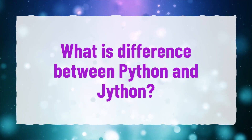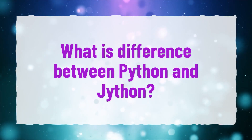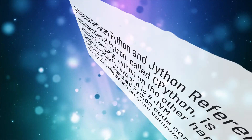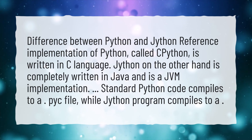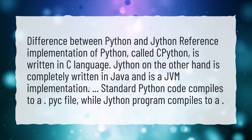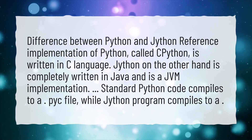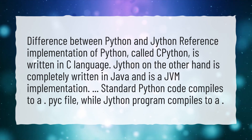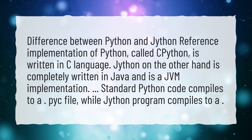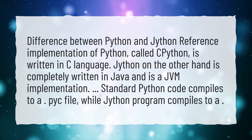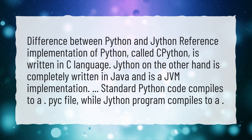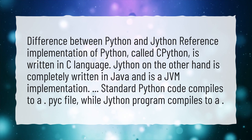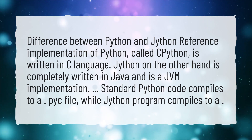What is the difference between Python and Jython? The reference implementation of Python, called cPython, is written in C language. Jython, on the other hand, is completely written in Java and is a JVM implementation. Standard Python code compiles to a .pyc file, while Jython programs compile to .class files.